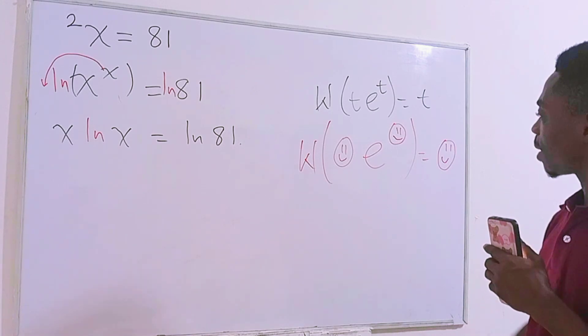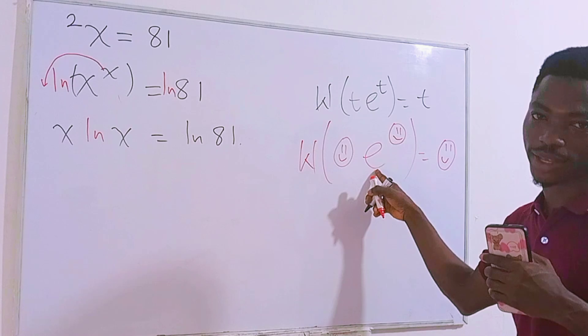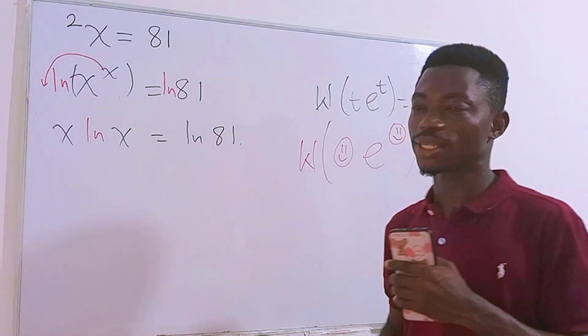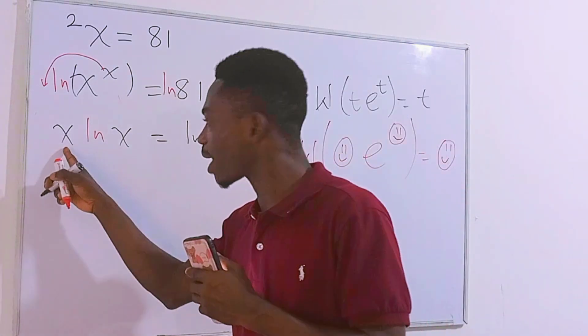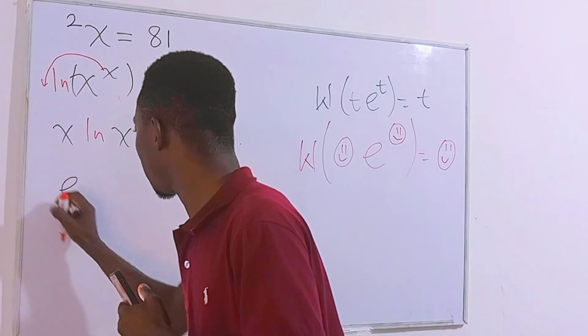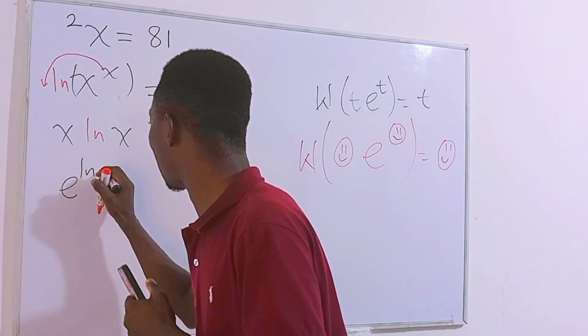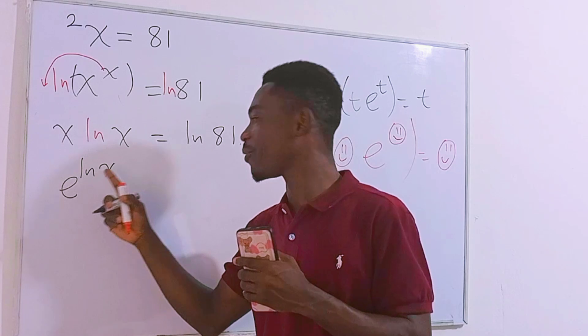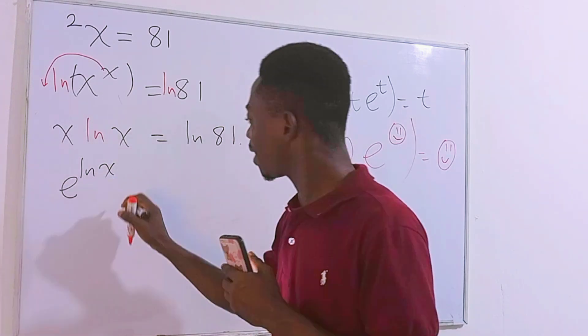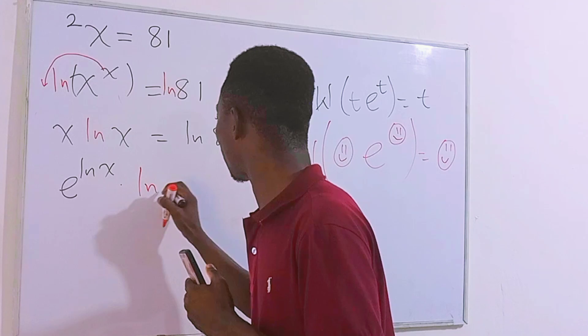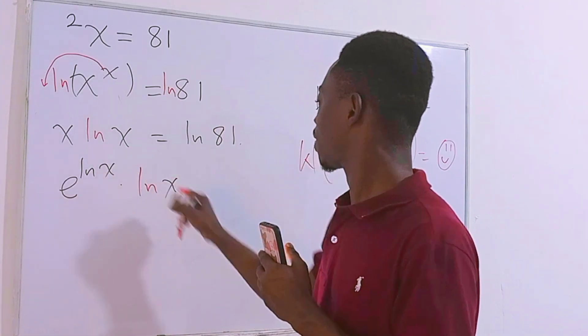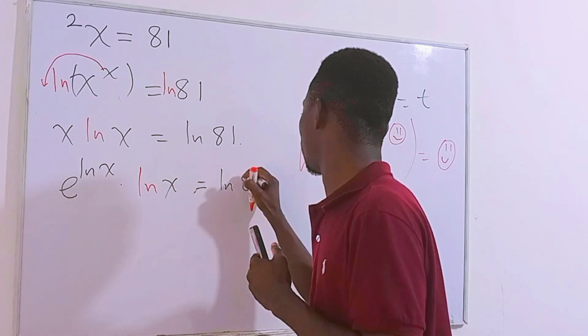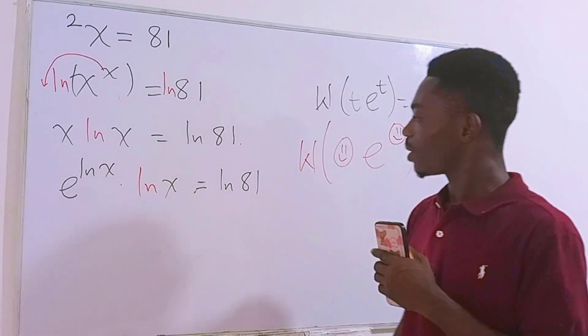But look at this. This right here must always be e. If you look at the equation right here we don't have e in this. But we can basically bring it. Check this out. I will see this x right here as e raised to the power ln of x. Simply because this e and then this ln will undo each other and we'll be left with just x. Then times ln of x right here. And this is equal to ln of 81. Cool.